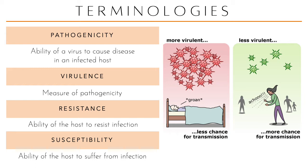A more virulent virus will lead to clinical disease more severely, rendering the host too sick to transmit the virus to more people because the host is not out doing normal activities. In contrast, a less virulent virus causing mild infections permits the host to go out, resulting in a higher chance of transmission. So what are the determinants of virulence when we talk about viruses?